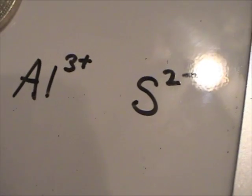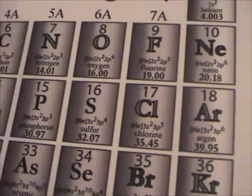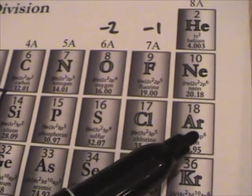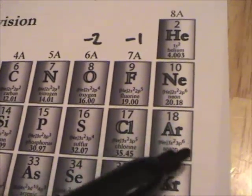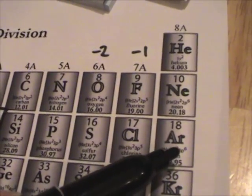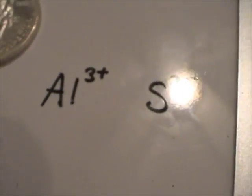And sulfide, remember, was in group 6A, so it only needs two more electrons. You'll look in the periodic table. Sulfur is in group 6A. It only needs two more electrons to have the same electron configuration as this very stable argon noble gas. So sulfur will form a two minus charge. Aluminum forms a plus three.